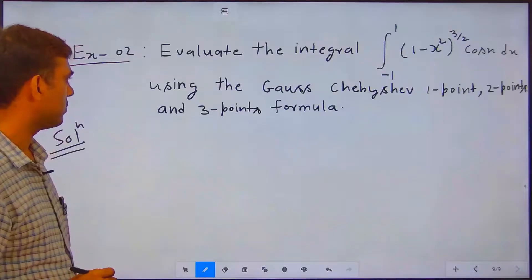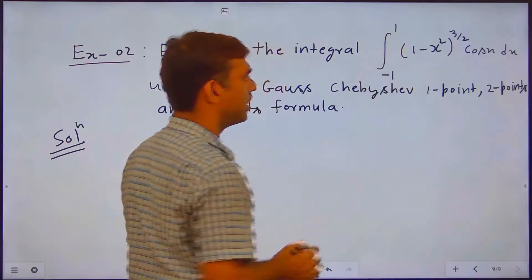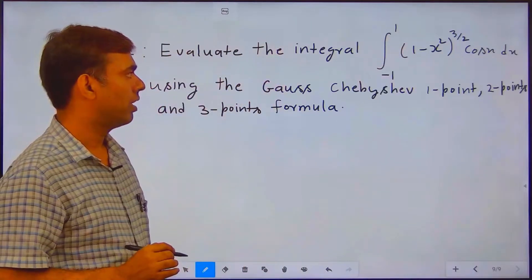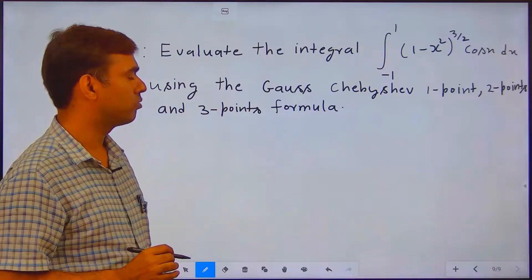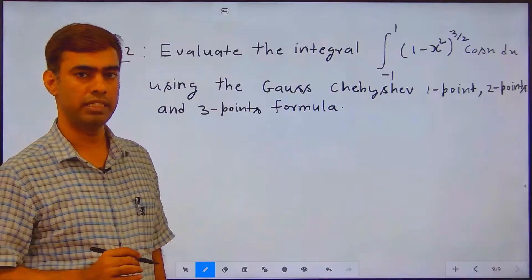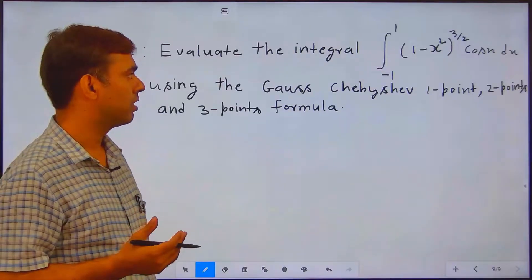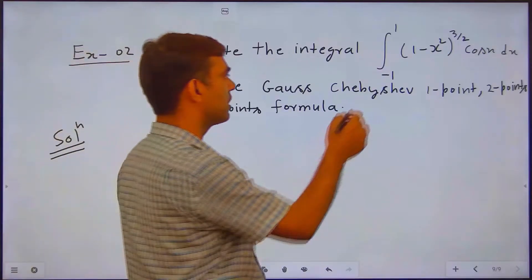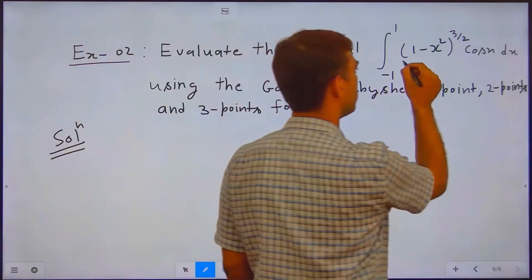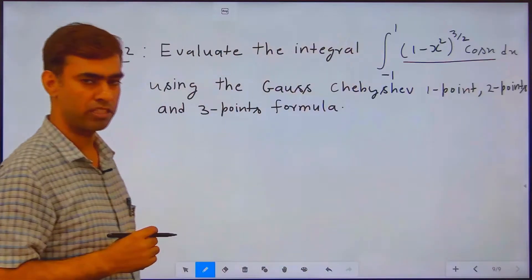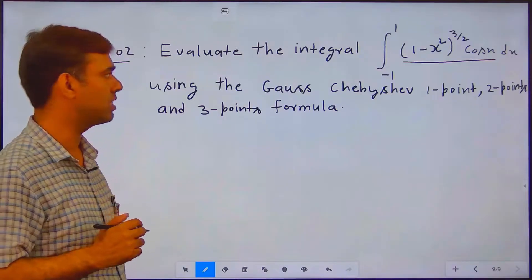If we closely observe this integration, the lower limit is minus 1 and upper limit is plus 1, and the integrand is (1 minus x squared)^(3/2) cos(x) dx. So there is no need to convert the limits, because the integration is already in minus 1 to 1 form. We only need to arrange this function as w(x) into f(x), because in the Gauss-Chebyshev method the weight function is 1 over the square root of (1 minus x squared).